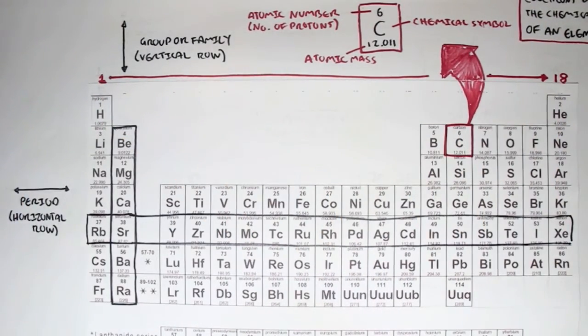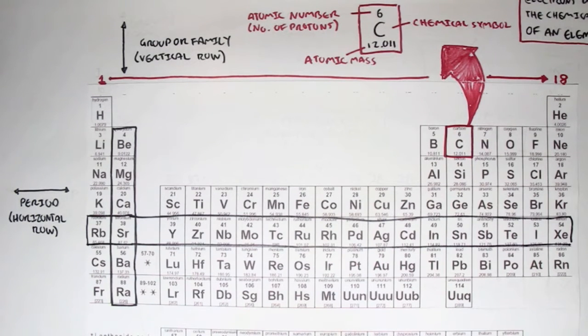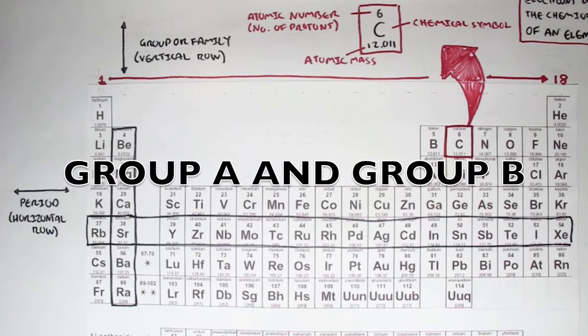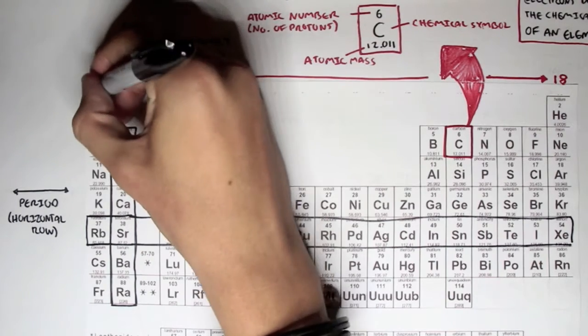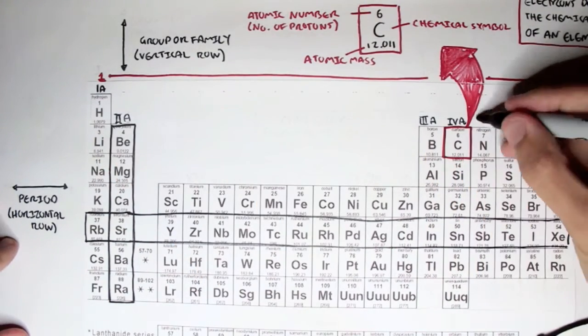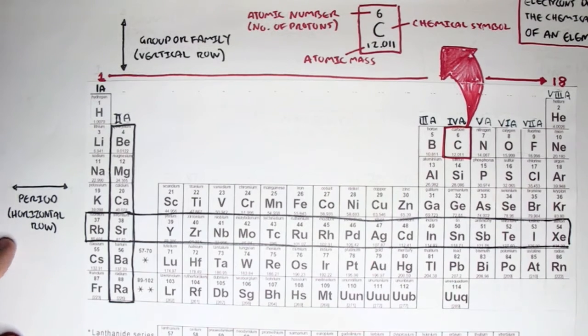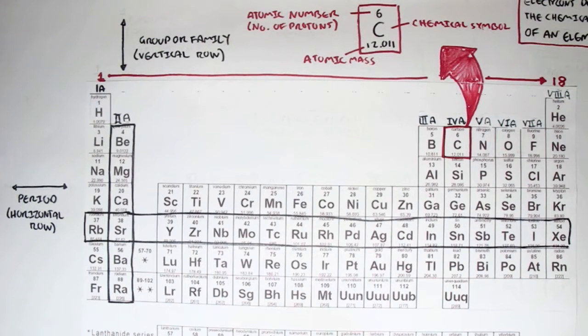But there's a better way to group these elements. We can further group them into columns by the number of electrons in the outer shell and assign each column a Roman numeral. From this, we get two groups, A and B. Here is group A: 1A, 2A, 3A, 4A, 5A, 6A, 7A, 8A. And the remainder, group B, starts from here.